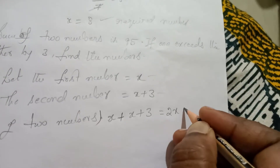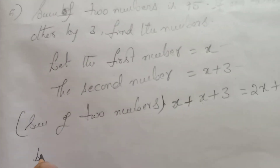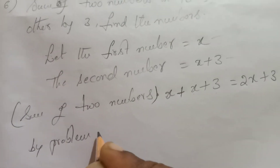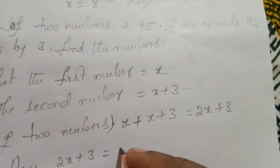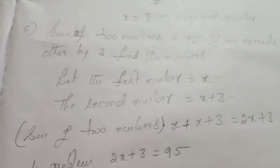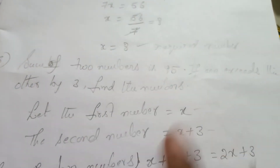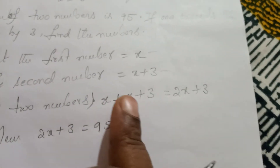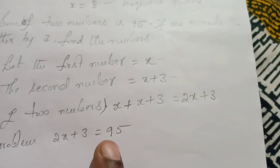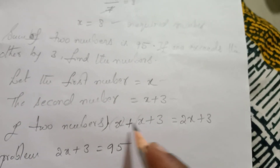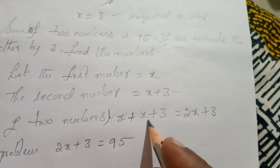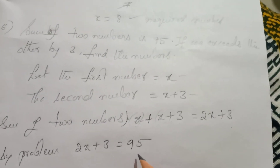x plus x is 2x, and 2x plus 3. By the problem, the sum of two numbers is 95, so 2x plus 3 is equal to 95.